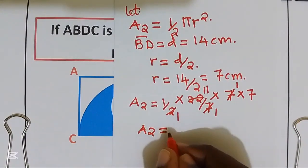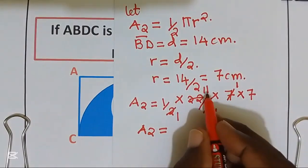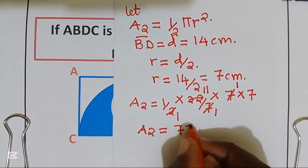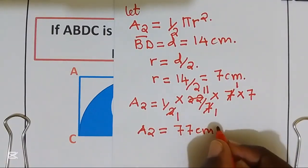Area 2, the area of our semi-circle, is going to be 11 multiplied by 7, we get 77 cm squared.